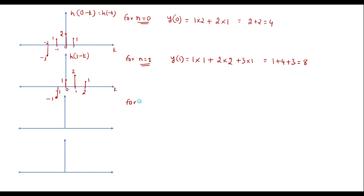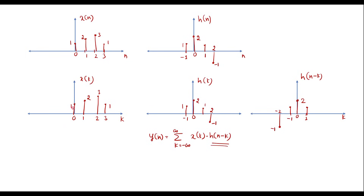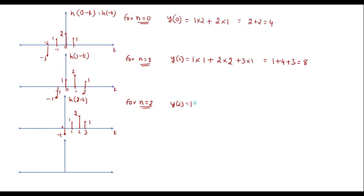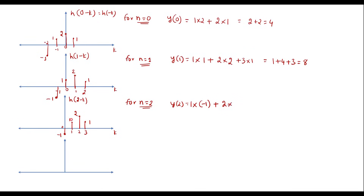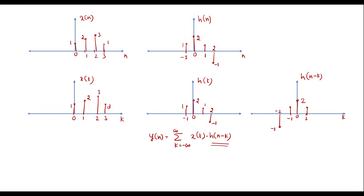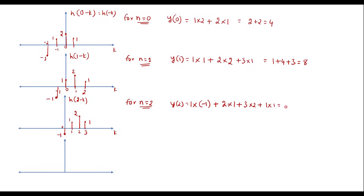For n equal to 2, shift the signal one more position to the right to get h of 2 minus k. At k equal to 0 it is minus 1, at k equal to 1 it is 1, at k equal to 2 it is 2, at k equal to 3 it is 1. Multiplying with x of k: 1 times minus 1 plus 2 times 1 plus 3 times 2 plus 1 times 1, giving minus 1 plus 2 plus 6 plus 1, which equals 8. So y of 2 equals 8.